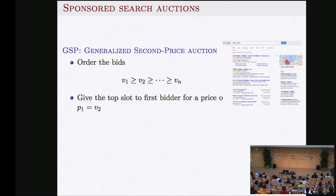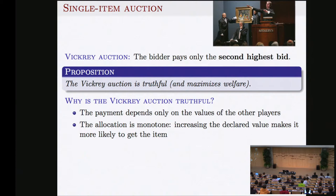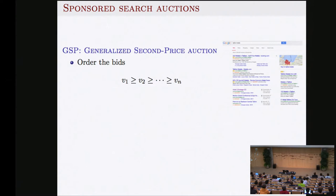Yahoo, which competed with Google at one time, had a first-price auction rather than a second-price auction. I don't believe that's the only reason Yahoo failed, but it makes you think. A little bit of game theory and mechanism design — knowing the second-price auction — may make you $50 billion per year. But you have to learn it very well, because Google's auction is actually not truthful.